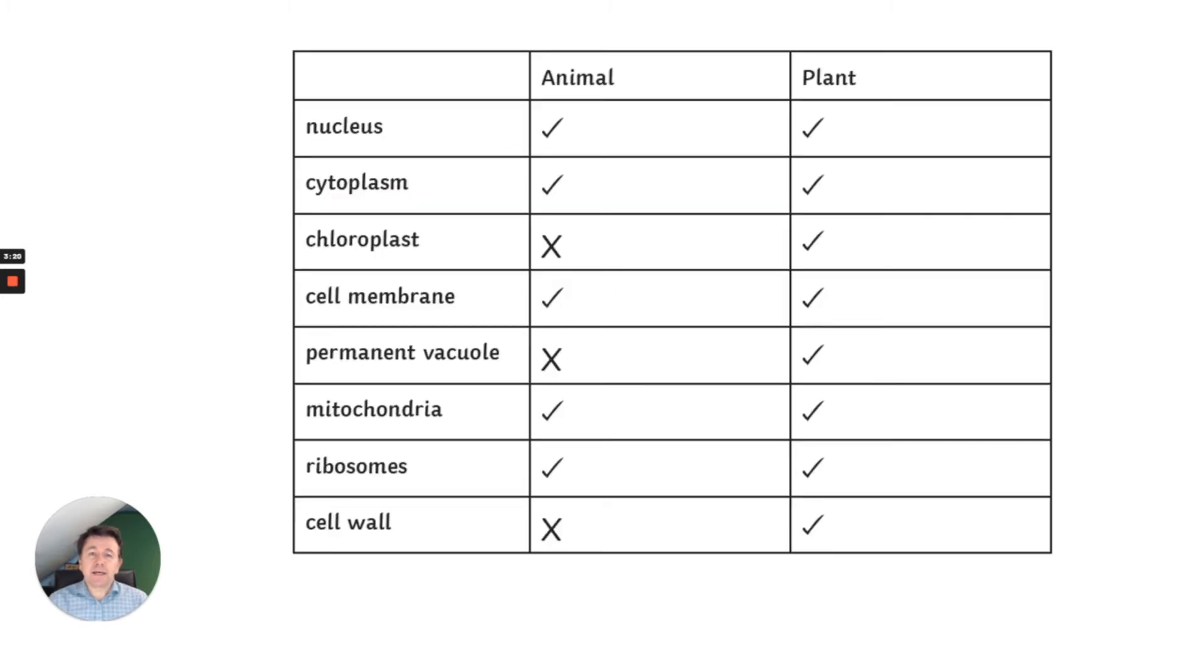So here are the similarities and differences. They both have a nucleus and cytoplasm, but an animal cell doesn't have chloroplasts because they don't photosynthesize, whereas a plant does. Both have cell membranes. A permanent vacuole is only found in a plant. Mitochondria and ribosomes are in both, and a cell wall is only found in a plant.